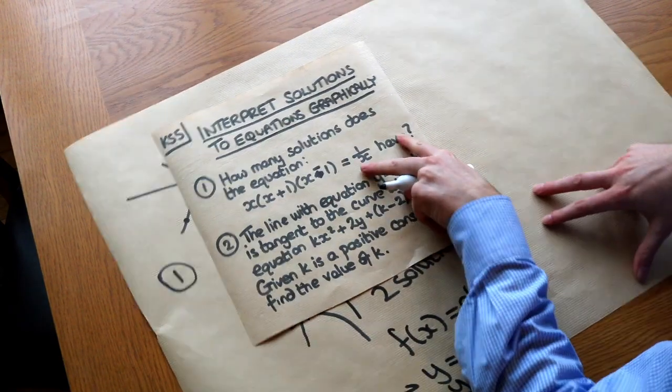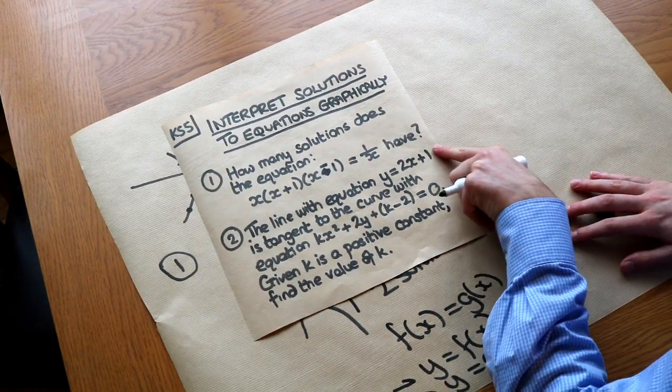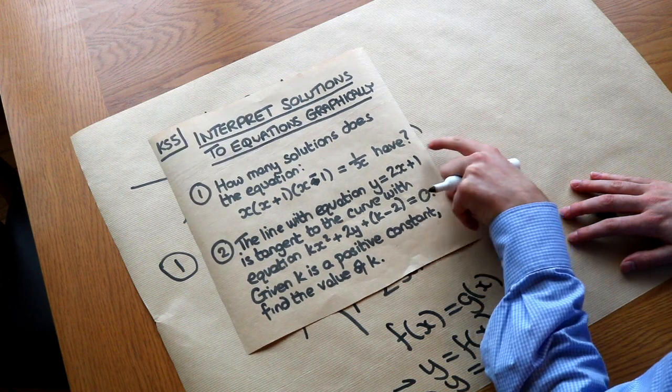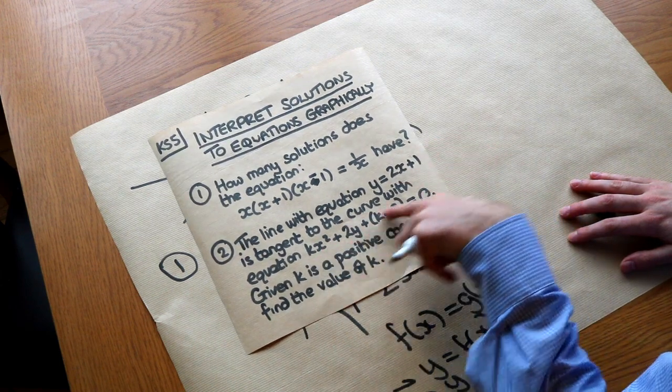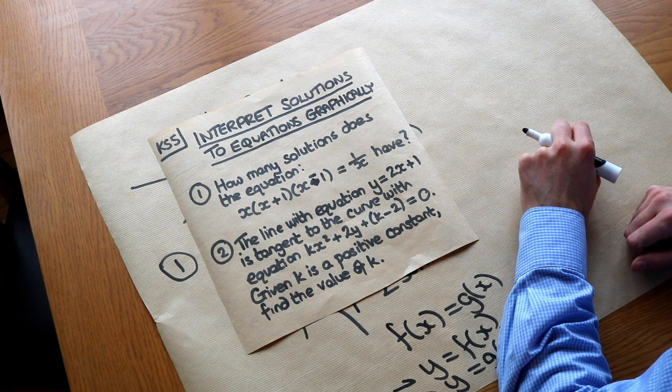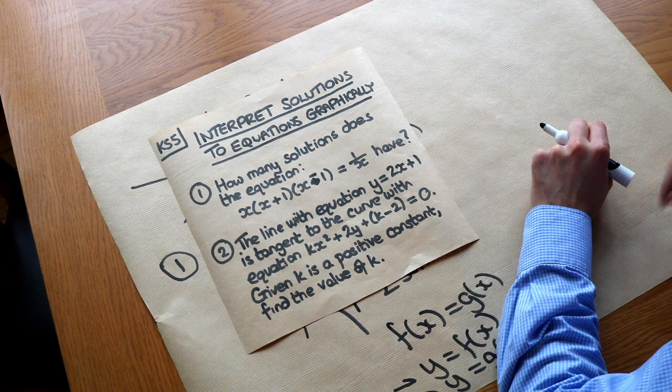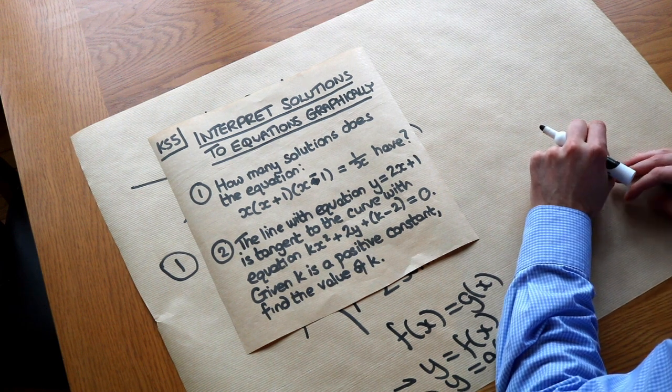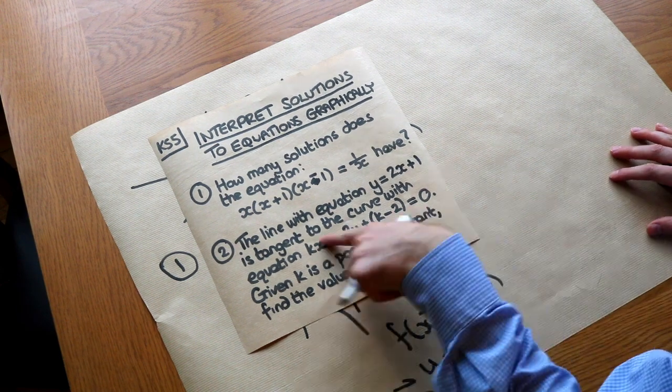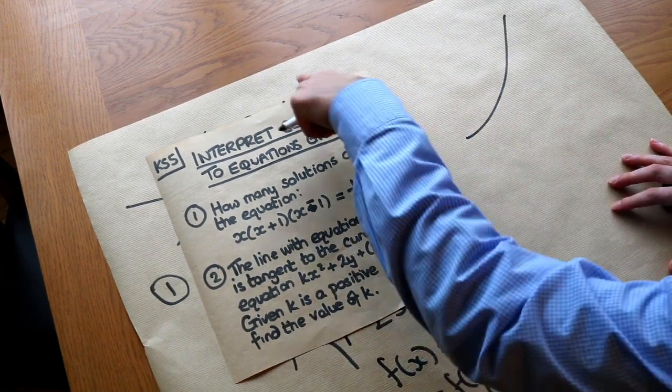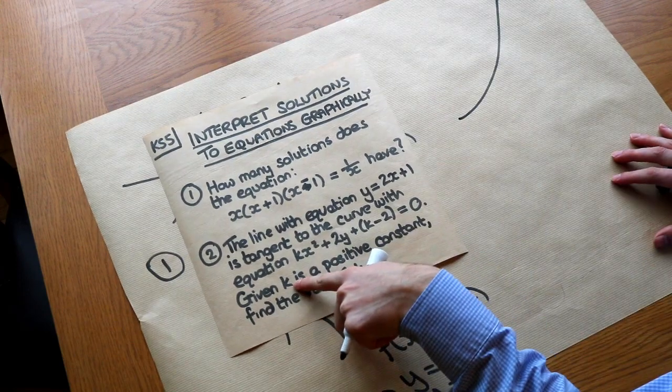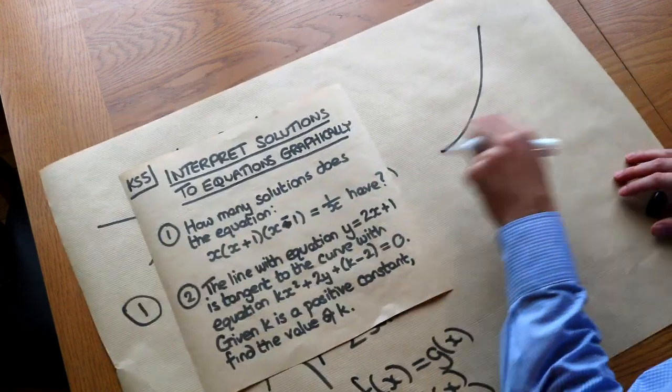Then this second equation here, the line with equation y equals 2x plus 1 is tangent to the curve with equation kx squared plus 2y plus k minus 2 equals 0. Given k is a positive constant, find the value of k. So this is a quadratic curve here, so we know it's going to look something like this. And we know it's going to be a smiley face shape because it tells us k is a positive value, so this is a positive x squared term.